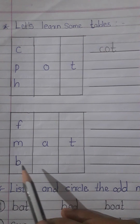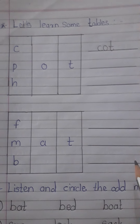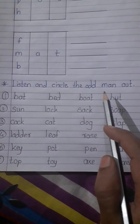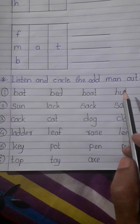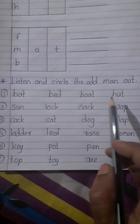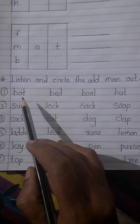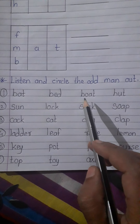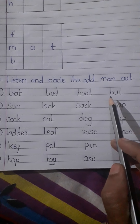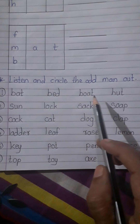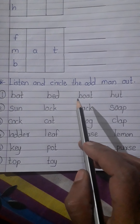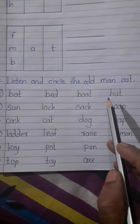There is also a next exercise for you: listen and circle the odd man out. You have to find which is the odd word. See: first is B-A-T bat, second is B-E-D bed, third is B-O-A-T boat, fourth is H-U-T hut. Which one is odd? Very good — H-U-T hut, because all the first letters are B, only hut has H.